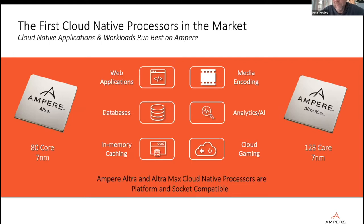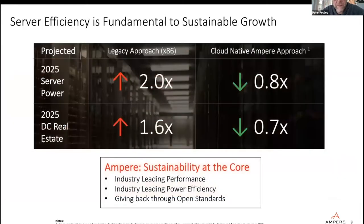We have a single thread per core, lots of cores, and we use a lot less electricity than our competitors. We currently have two chips in market: an 80-core chip found in the Mount Collins platforms, and a 128-core chip. The 80-core is more suited for high performance with extra cache layers, while the 128-core is for higher density. They are socket compatible, so you could potentially swap them out.